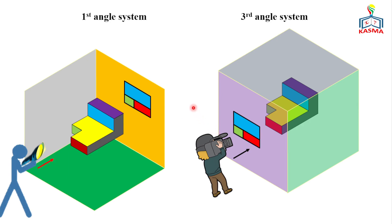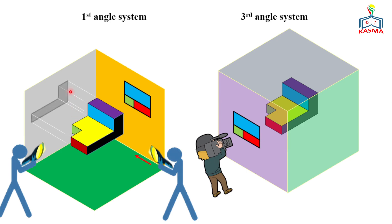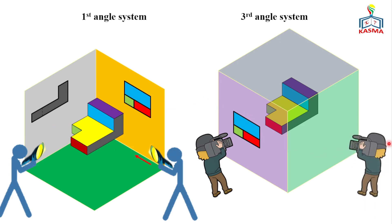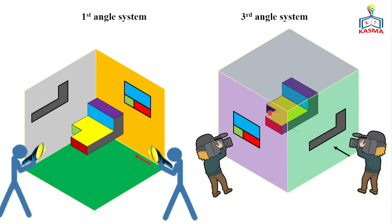Now let's take the right side views. In the first angle projection, we emit light from the right side and get the L-shaped surface, with interior surfaces projected and shown as hidden lines. In the third angle projection, the layouts are the same, but the plane is between the object and the cameraman. The surfaces are projected back onto the plane, with hidden surfaces shown by hidden lines.